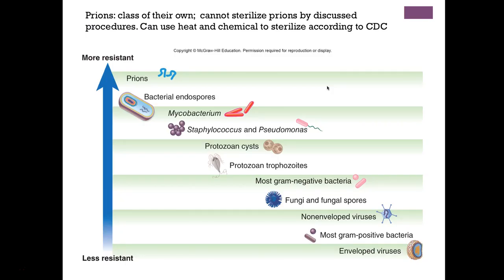Our primary targets of microbial control are microorganisms that can cause infection or spoilage. Bacterial endospores are the most resistant. Looking at the resistance hierarchy from least to most resistant: enveloped viruses, gram-positive bacteria, non-enveloped viruses, fungi, gram-negative bacteria, protozoa, specific Staphylococcus and Pseudomonas, Mycobacterium — which carries mycolic acid giving it a waxy coating — and then bacterial endospores at the top of resistance.